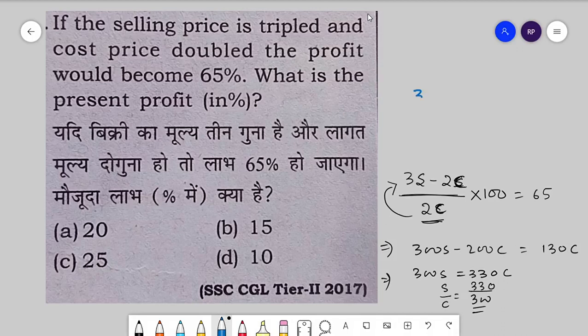On the cost price of 300, we are getting 30 as a profit. Selling price is 330, cost price is 300, so the profit is 30.